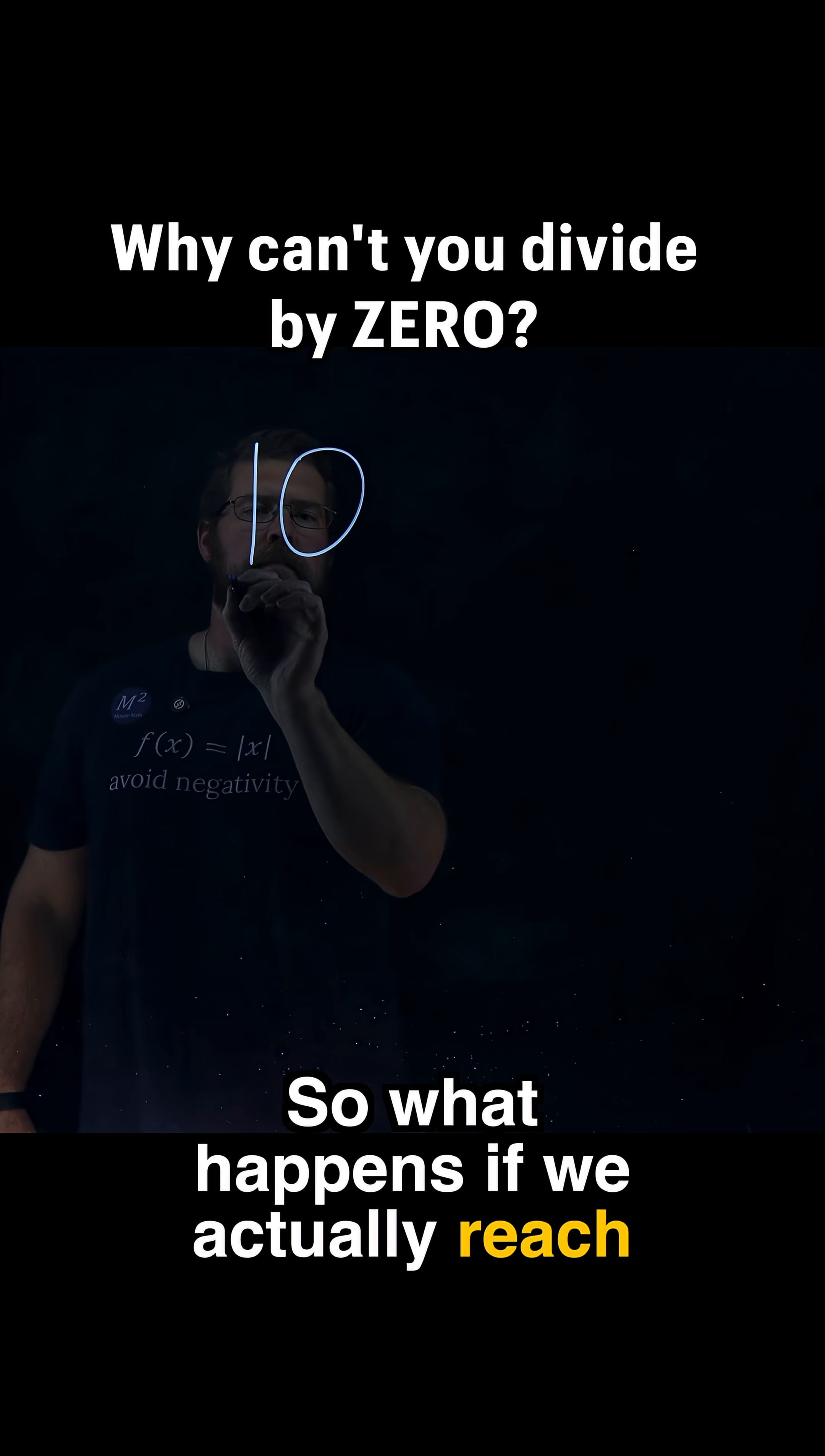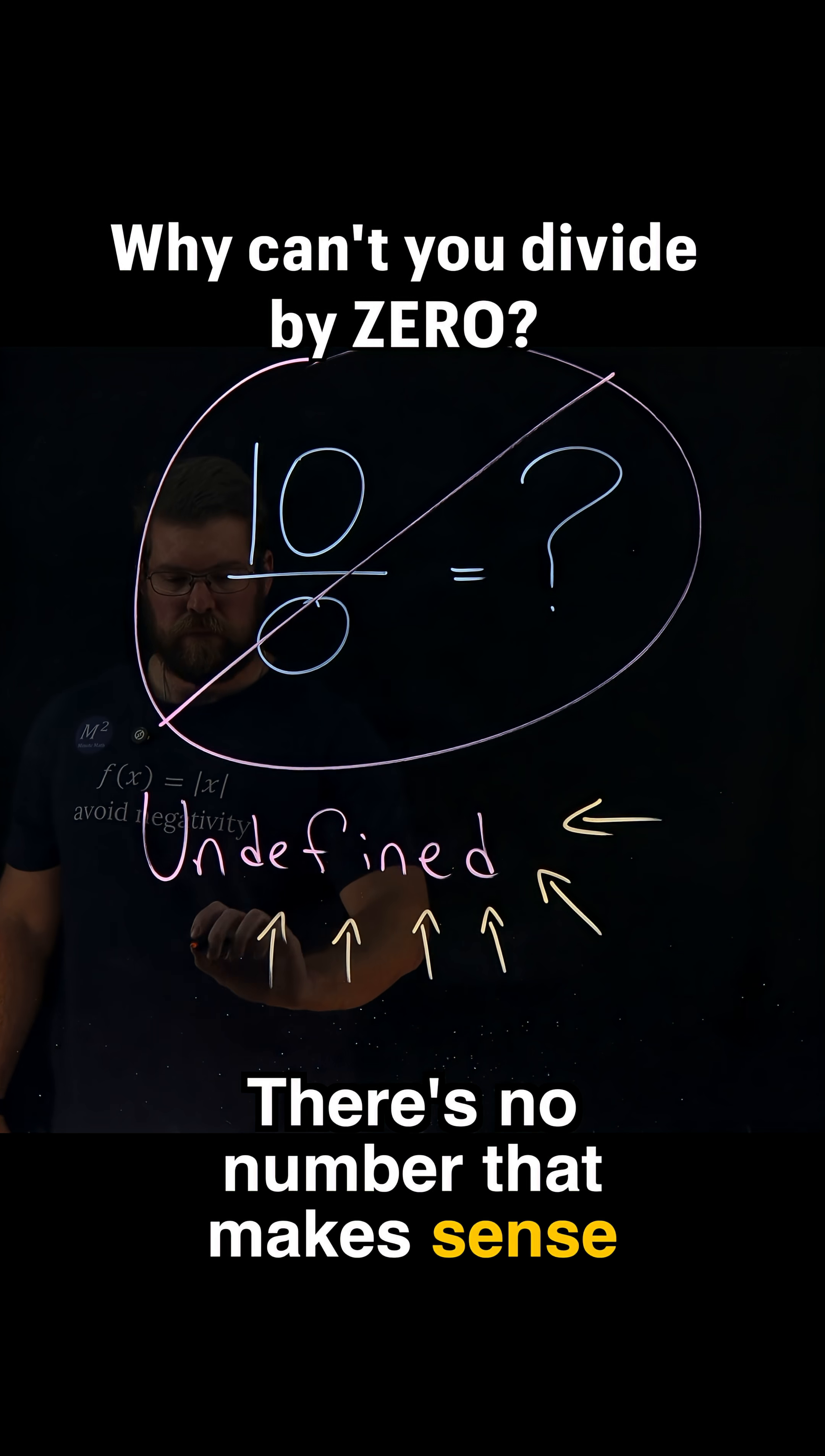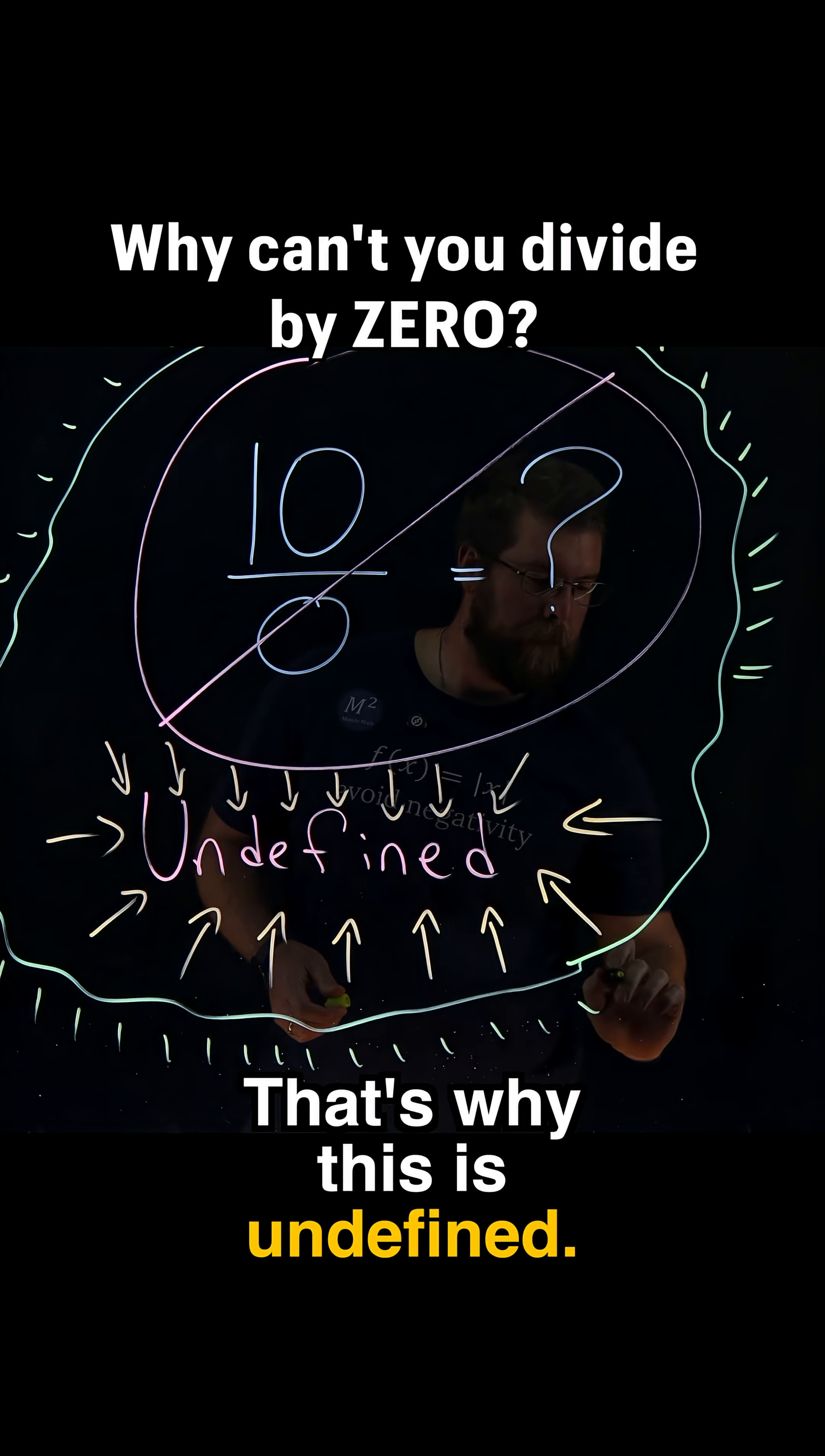So what happens if we actually reach zero? Ten divided by zero? Well, math breaks. There's no number that makes sense here because nothing multiplied by zero can give you ten. That's why this is undefined.